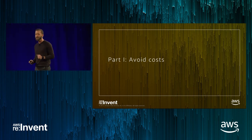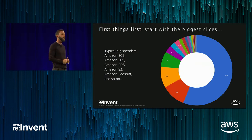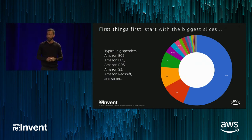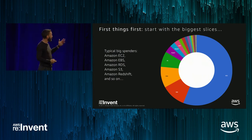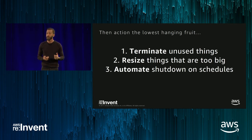Starting with avoiding costs — how do we use less and turn off things we're not using. Start with first things first: the big spenders. This is an aggregated view of about $5 billion of cloud spend across services. Not really surprising, EC2 is the big chunk. What is interesting is EBS — huge area for snapshot waste and unused volumes. Then RDS, S3, and a long tail over time. Start with these services first, then look at the low-hanging fruit: turning off things that just aren't being used. It's always amazing how many idle resources are doing nothing.